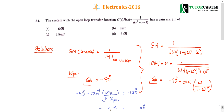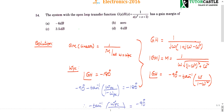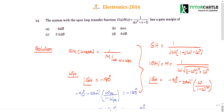Question number 54: the system with the open loop transfer function G(s)H(s) = 1 / [s(s² + s + 1)] has a gain margin of — so this question is a repeat model in every exam. Gain margin and phase margin questions are quite common and repeat in many competitive exams, so just try to concentrate on them.